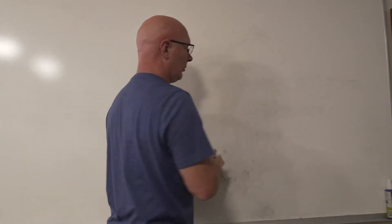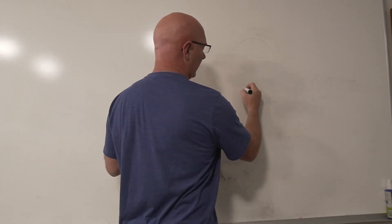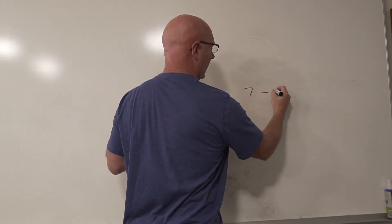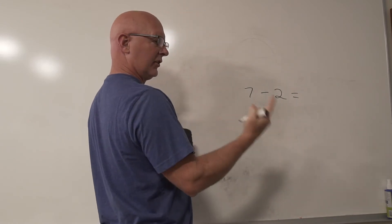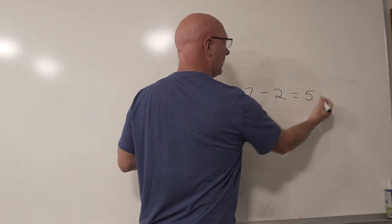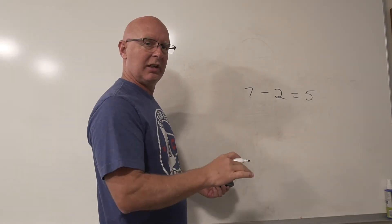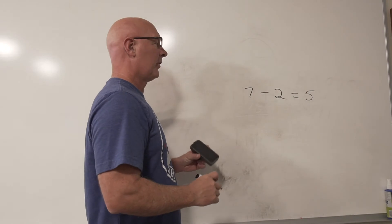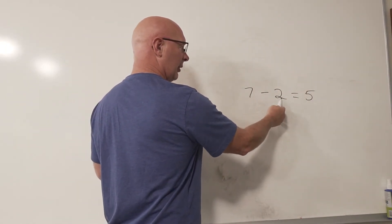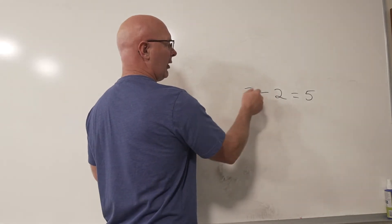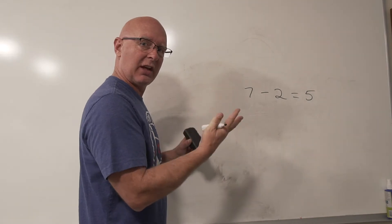Now let's talk about subtraction — it works exactly the same way as addition. If I said what is 7 minus 2, I know that counting back gives me 5. It works the same as addition, just working backwards. Another way to think about it: starting at 2, the lower number, count how many times to reach 7 — that's five counts — so the answer is 5.